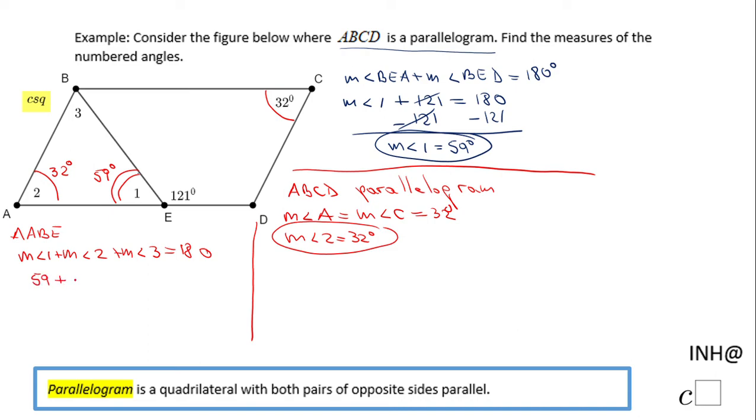And angle one is 59, angle two is 32, and angle three is the one we need to find out. So now we're going to add 59 and 32, and that is 91 degrees. And the last thing we're going to subtract 91 on both sides, and the measure of angle three will be 89 degrees.